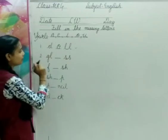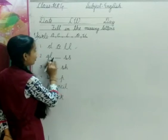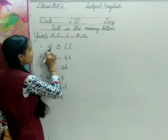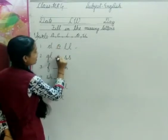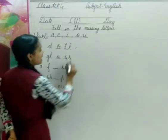Okay, now our second word is G-L dash double S, glass. Okay, yeh kya hai? Glass. Glass mein kya se likhenge? That is A. Jaise hum yahan pe A likhenge, hamara word complete ho jayega. Or kya ban jayega? Glass.